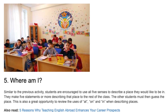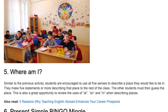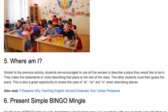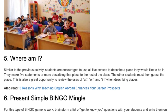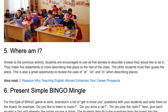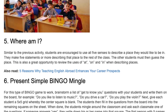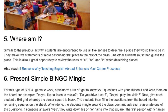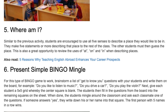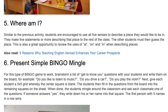Activity 5: Where Am I? Similar to the previous activity, students are encouraged to use all five senses to describe a place they would like to be in. They make five statements or more describing that place to the rest of the class, and the other students must then guess the place. This is also a great opportunity to review the uses of at, on, and in when describing places.